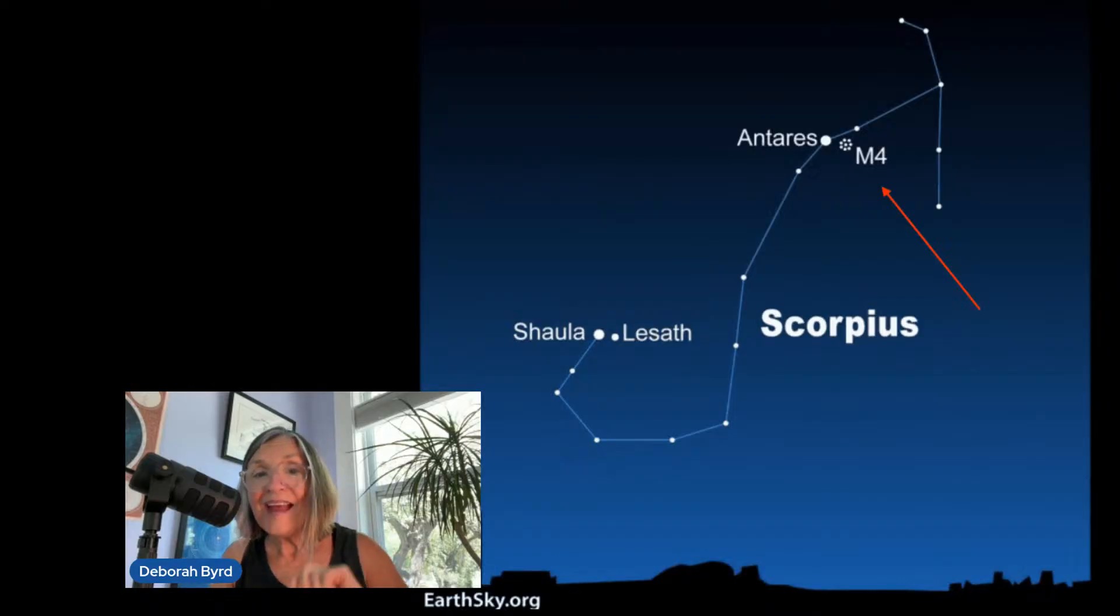But there's more. In a dark sky, with your eye alone, you can see M4 right next to Antares. It's a distant and ancient cluster of stars.